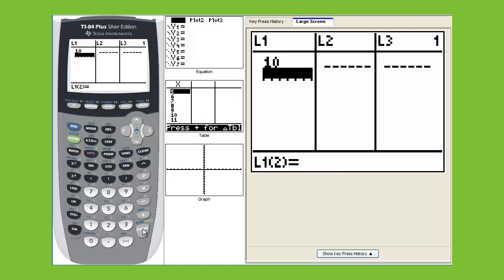Type in 10, hit enter. Then we're going to put in 15, hit enter. 20, enter. It goes 25 and then 30. If you type in, there's your list 1. That's your X column. Your Y column is going to be your population.